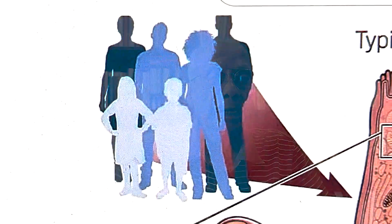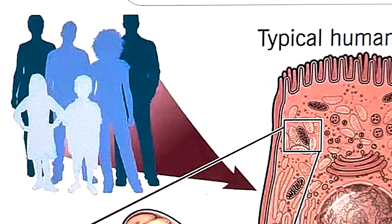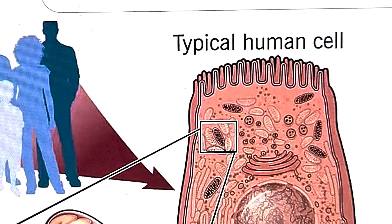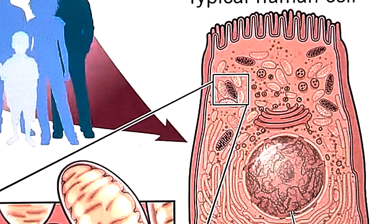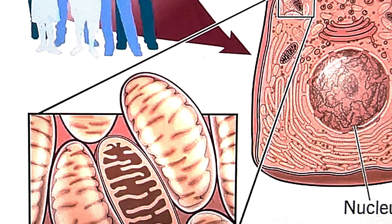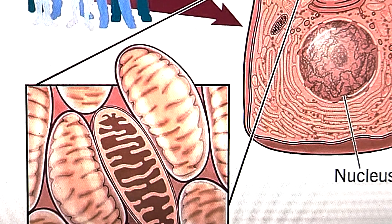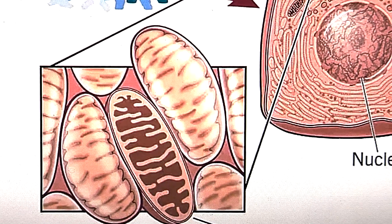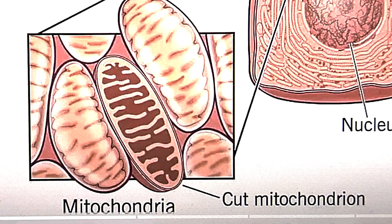Before we discuss mitochondrial dysfunctions or diseases, we need to understand what mitochondria are. It is a structure found in the cytoplasm of every cell in your body, covered by two thin membranes — the inner one corrugated — that generates most of the chemical energy needed to power the cell's biochemical reactions. It is really an energy powerhouse.